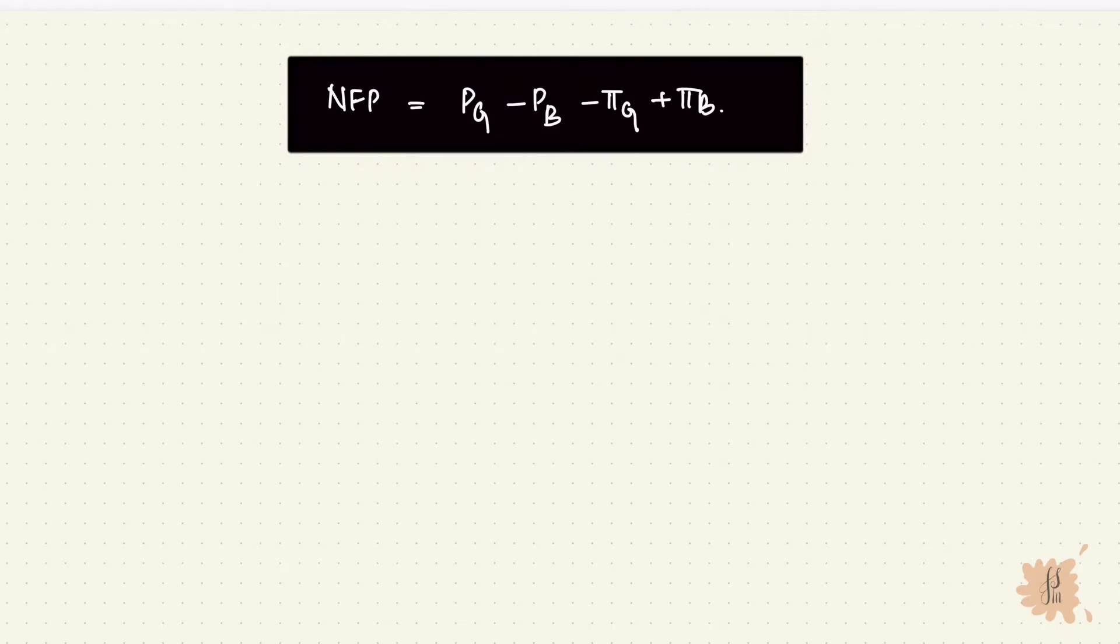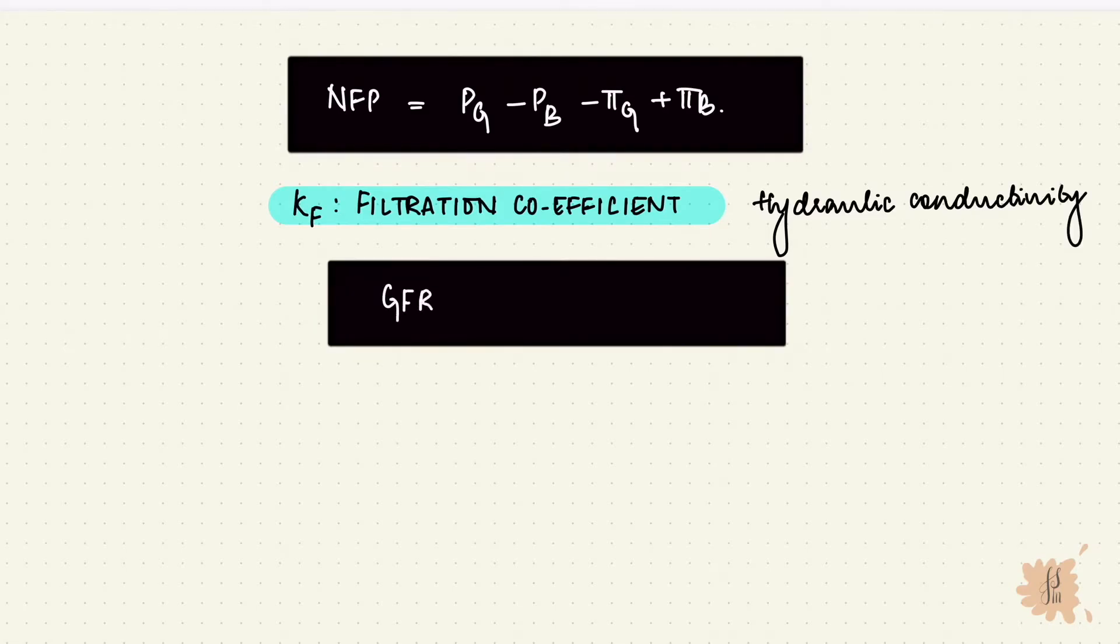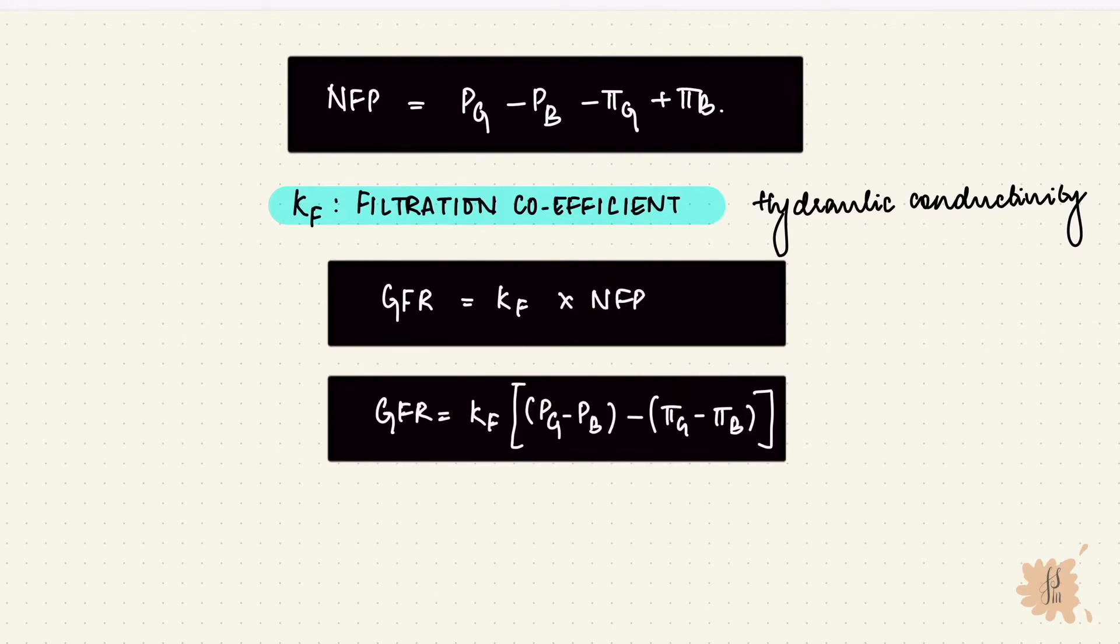Another factor that determines GFR is the KF, or the filtration coefficient. This is the hydraulic conductivity of the barrier. It includes things like surface area and thickness of the basement membrane for permeability. So the GFR is the product of KF and the net filtration pressure. Higher the KF, higher the GFR.